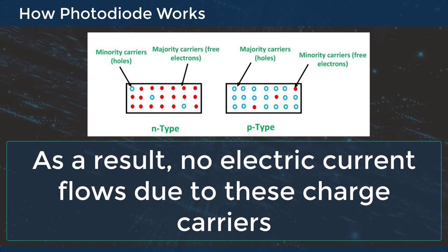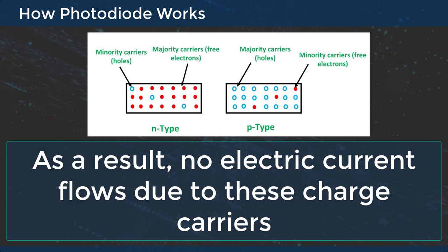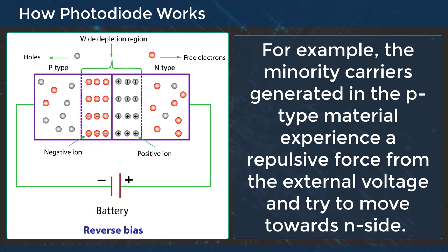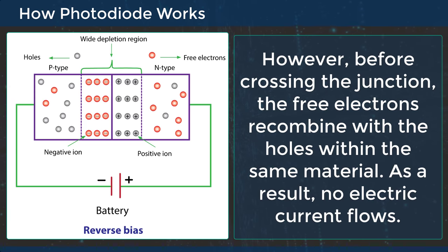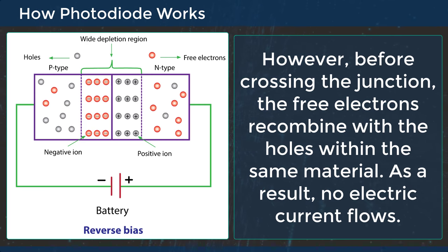As a result, no electric current flows due to these charge carriers. For example, the minority carriers generated in the P type material experience a repulsive force from the external voltage and try to move towards the N side. However, before crossing the junction, the free electrons recombine with the holes within the same material. As a result, no electric current flows.